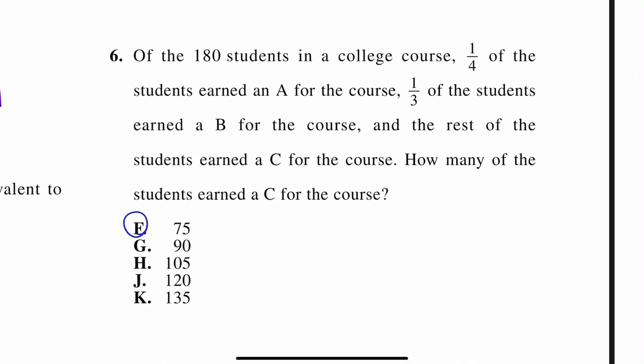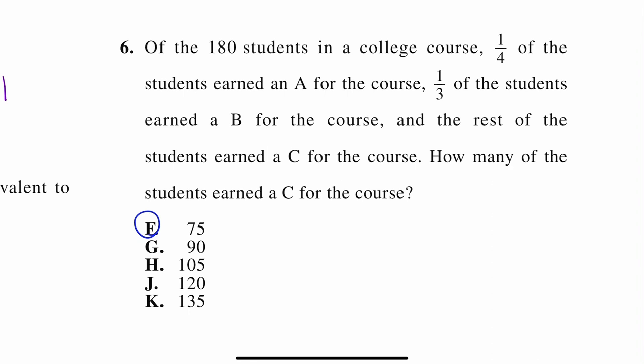All right. Number 6. Of the 180 students in a college course, one-fourth of these students earned an A for the course. One-third earned a B for the course. And the rest of the students earned a C for the course. How many of the students earned a C? So, I have a total of 180 students. So, let's see how many earned an A. It says a fourth of, of typically means multiplication, the students. So, a fourth of 180, and if you don't know this off the top of your head, you can always type in your calculator, is 45. So, 45 students got an A.